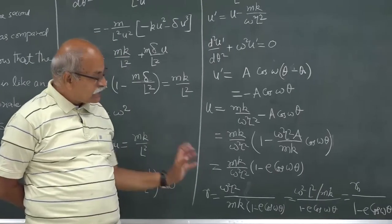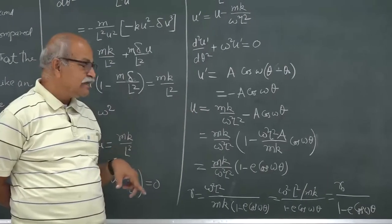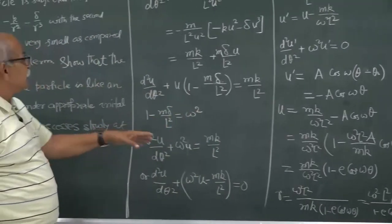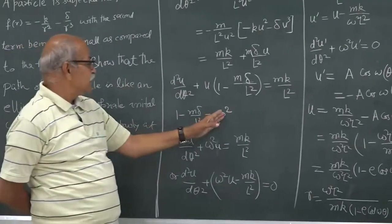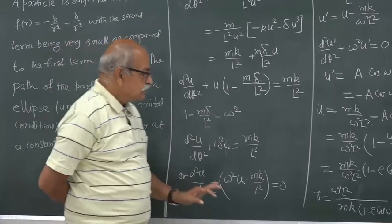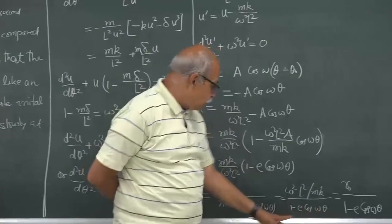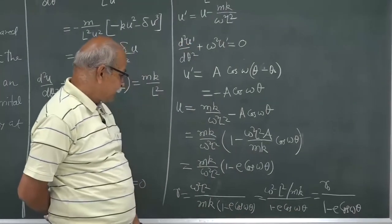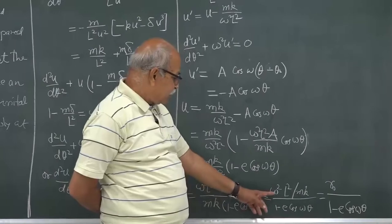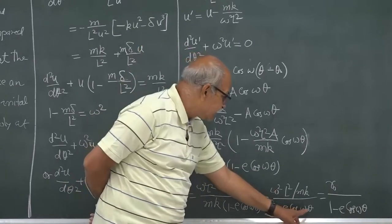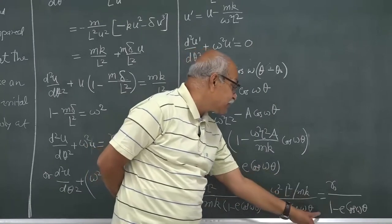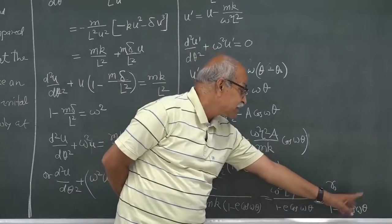Remember that ω is very close to 1. We defined ω² = 1 − mδ/L², so if δ = 0, ω = 1. When δ = 0, this factor is 1 everywhere, and we recover the original equation r₀/(1 − e·cos θ) — the standard conic section. But now ω has a value just slightly different from 1, and that changes the shape of the path.